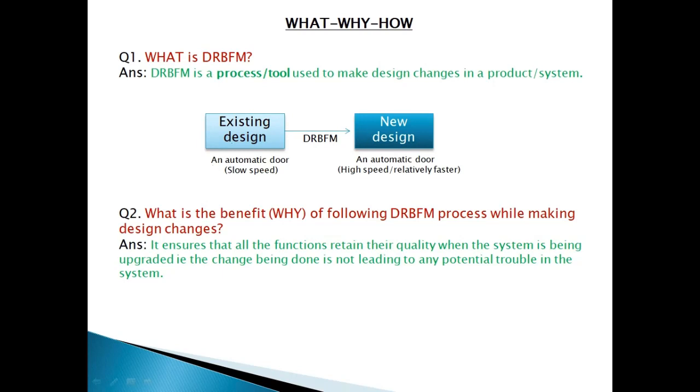For example, if we have an automatic door system which opens and closes automatically when it detects person coming in and out. And then because of more crowd, people started complaining that the door is very slow. So now we need to increase the speed of the motor that rotates and opens the door. So in this case, we will use DRBFM to increase the speed of the automatic door.